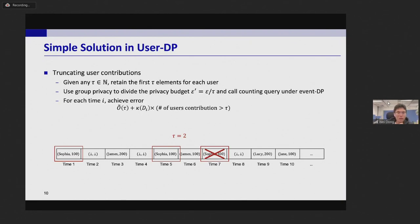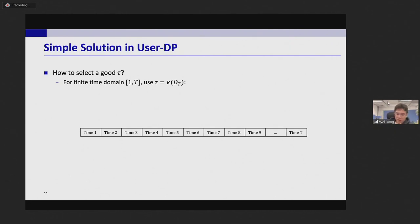And for each time i, this idea achieved the error to the big O tau plus kappa Di times the number of users with contribution larger than tau. The first term is the noise and the second term is the bias. Then the last thing is to select a good truncation threshold tau.